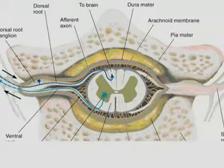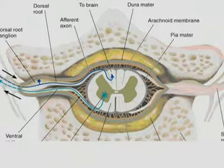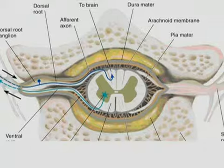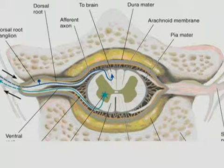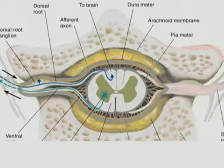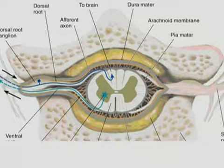Cerebrospinal fluid (CSF) is a modified tissue fluid. It is found in the subarachnoid space and also in the ventricular system of the brain. CSF replaces lymph in the central nervous system. It is present in the ventricular system in the brain and in the subarachnoid space of the spinal cord.